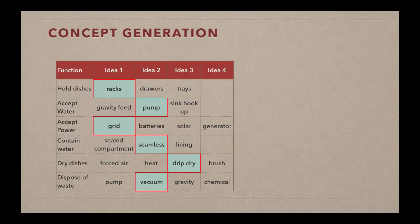So we might say, okay, our first design is in terms of holding dishes, achieving that function, we've decided to use racks. As for accepting water into the system, we're going to pump water in from a source. We're going to use electricity from the grid. It's readily available. We're going to use a seamless one-unit container to contain the water. We're going to drip-dry the dishes, and we'll use some type of vacuum pump to dispose of the waste. So that combination of different ideas for those critical functions would then be one idea for a concept.